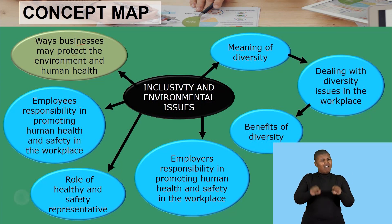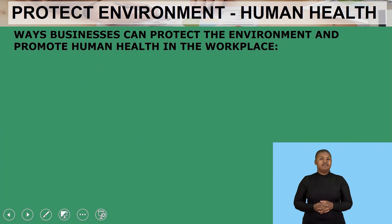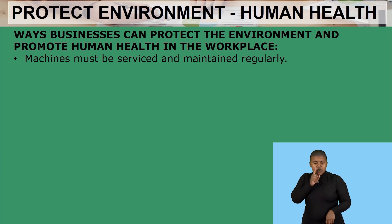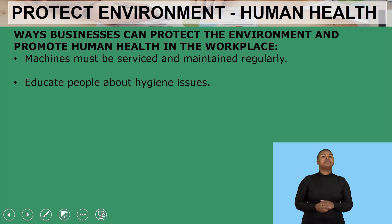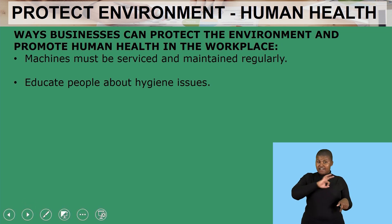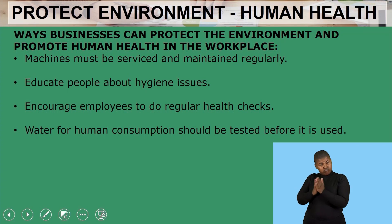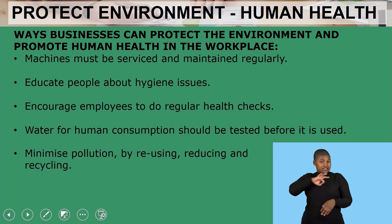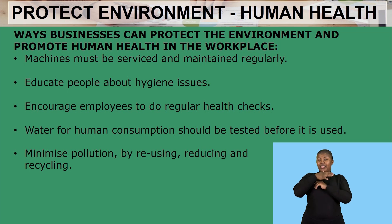The last part looks at ways businesses may use to protect the environment and human health in the workplace. The business should make sure that machines are safeguarded and maintained on a regular basis. They should educate employees about hygiene issues and encourage employees to do regular health checks. Water for human consumption should also be tested before it can be used, for the health of the workers inside.